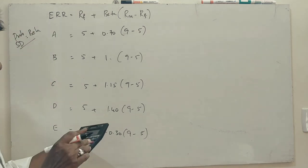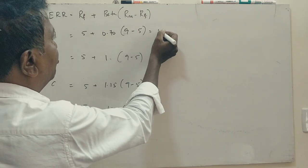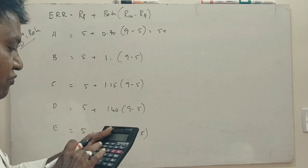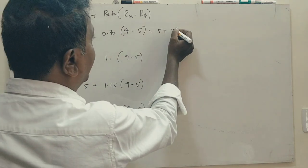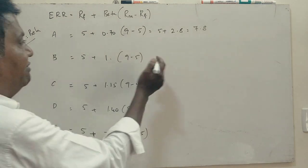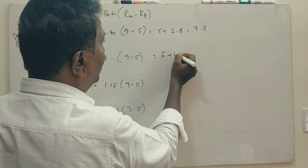Now, this is 5 plus, this is 4 percent, say 0.7 into 4, 2.8 percent, total 7.8. 4 plus 5 is 5 plus 4 is 9.